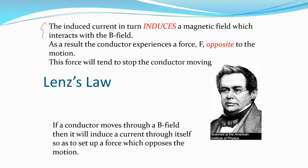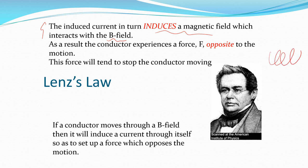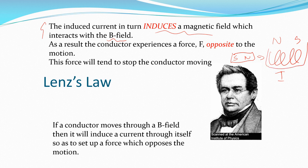The induced current — when you push a magnet into a coil — will induce a current in the coil. That current induces a magnetic field, so the coil now has its own magnetic field which interacts with the original magnet's field. As a result, the conductor experiences a force opposite to the motion. The coil of wire ends up acting like a magnet, opposing the original magnet — as if you're pushing two north poles together.